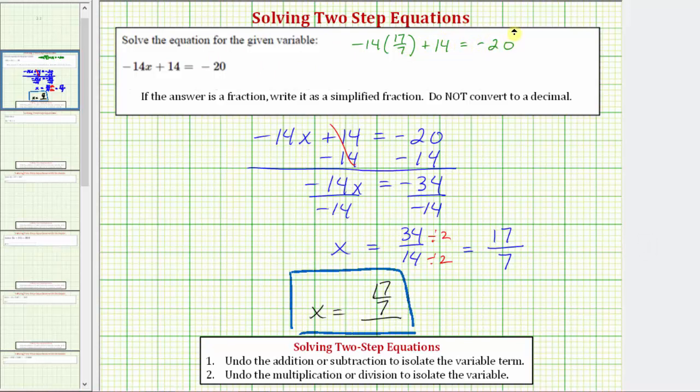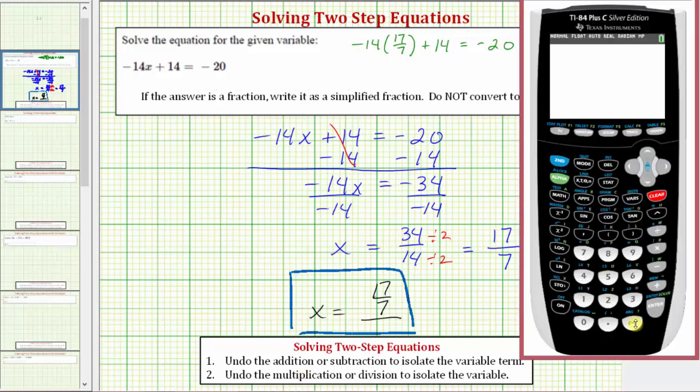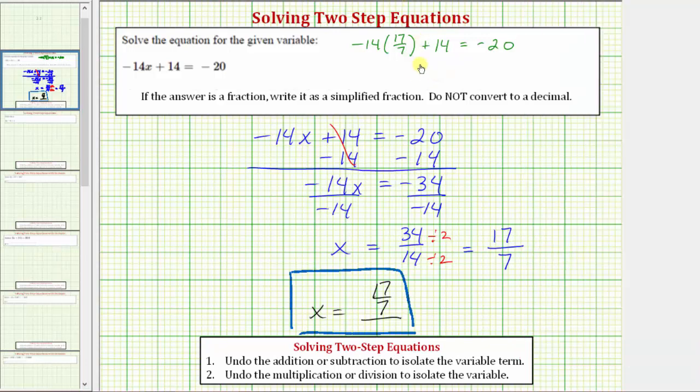Let's use the calculator and verify the left side of the equation does equal negative 20. So we'll enter negative 14 times 17 sevenths plus 14. Notice how the left side of the equation is equal to negative 20, and therefore our solution is correct. We would have negative 20 equals negative 20, which is true, verifying our solution is correct. I hope you found this helpful.